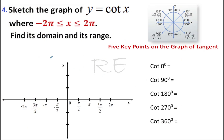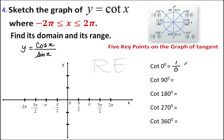We will understand cotangent as being cosine x over sine x. Between negative two pi and two pi, we will consider the five key points: zero, 90 degrees, 180, 270, and 360. Cotangent of zero is one over zero, which is undefined. Therefore, at zero, we have a vertical asymptote.